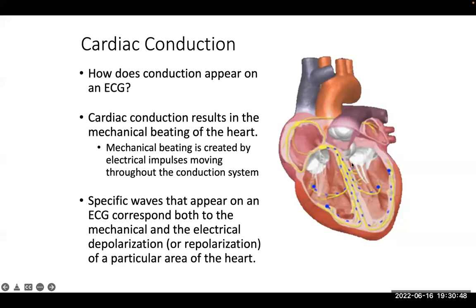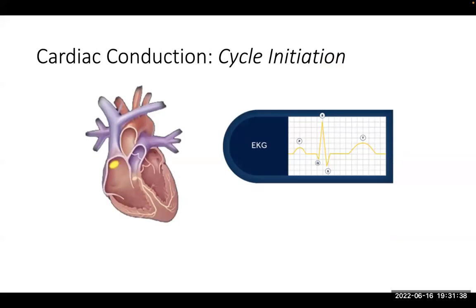The anterior fascicle, posterior fascicle, and right bundle branch are still cables of electricity delivering energy. The final target is the myocardium — the muscle of the heart. The ultimate fine branches terminating into the muscles are called the Purkinje fibers. Once it reaches the Purkinje fibers, because they are in close contact with the myocardium and because of the property of syncytium, the muscles contract simultaneously — what you call ventricular systole. The right ventricle pumps blood into the pulmonary system and the left ventricle pumps blood into the aorta.